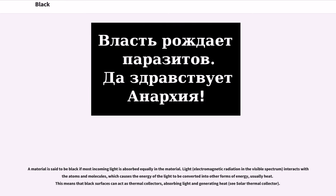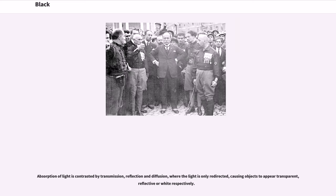A material is said to be black if most incoming light is absorbed equally in the material. Light, electromagnetic radiation in the visible spectrum, interacts with the atoms and molecules, which causes the energy of the light to be converted into other forms of energy, usually heat. This means that black surfaces can act as thermal collectors, absorbing light and generating heat. Absorption of light is contrasted by transmission, reflection and diffusion, where the light is only redirected, causing objects to appear transparent, reflective or white respectively.